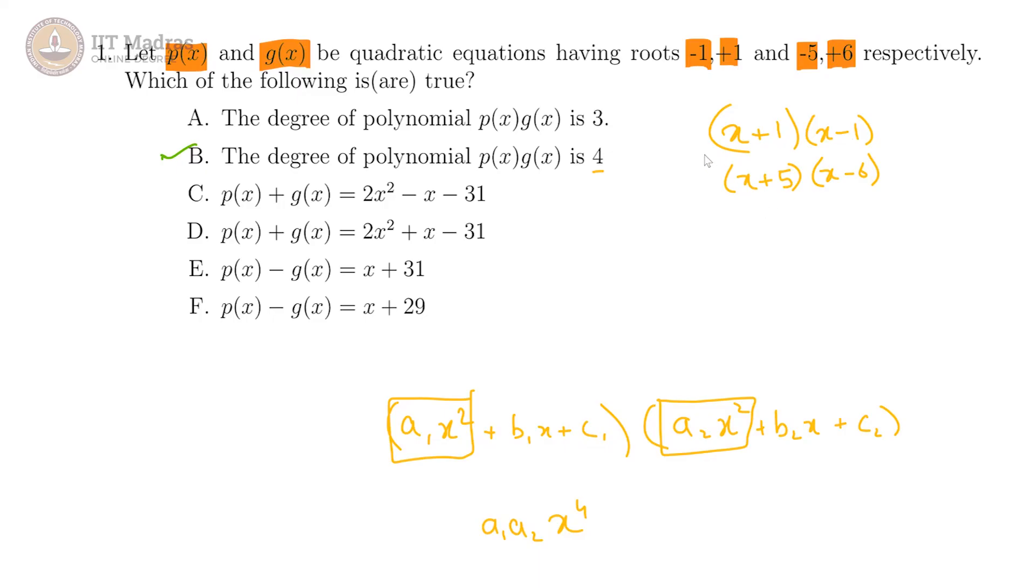So this gives us x² minus 1, and this is essentially x² minus x minus 30. So when we add these two, we get p(x) plus g(x) is equal to 2x² minus x minus 31.